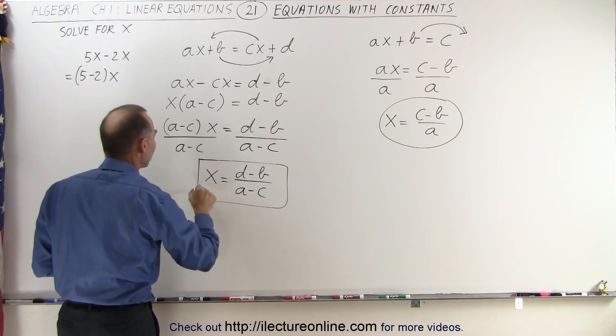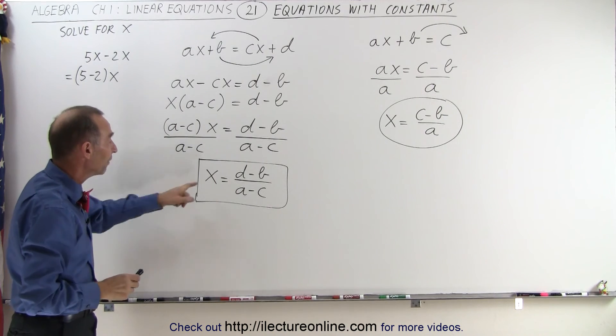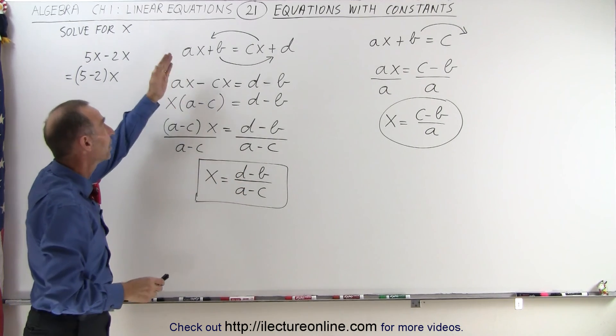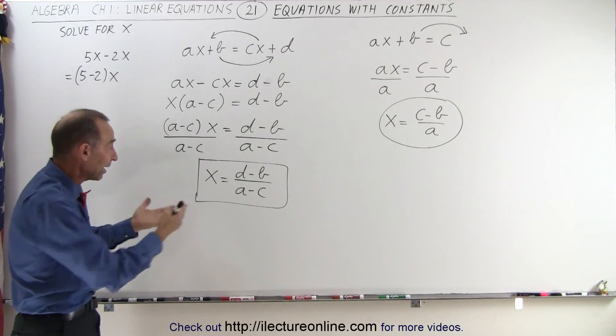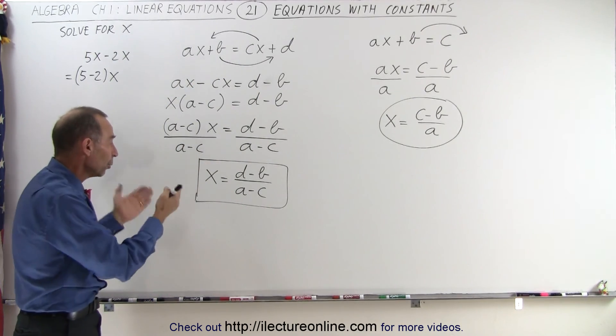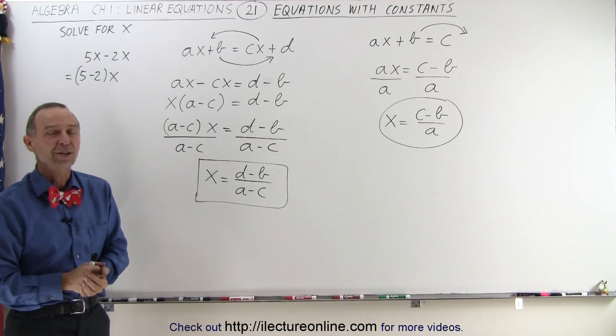And this would then be the final result, the solution to our original equation. If X equals D minus B divided by A minus C, the left side will equal the right side. And since we don't know what the values are for A, B, C and D, we'll just leave it in that format and it will be the correct solution. And that's how it's done.